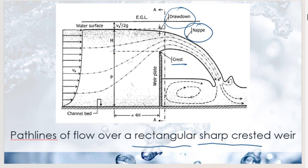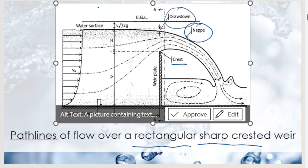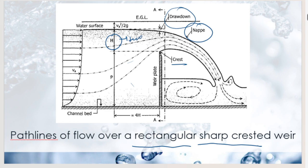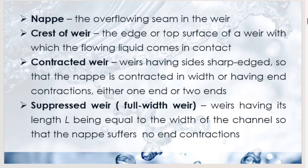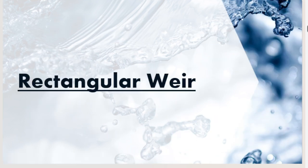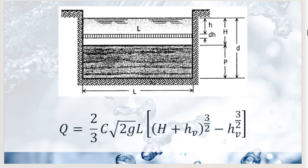There is also the Bazin formula, applicable for rectangular weirs with lengths from 0.5 m to 2 m, under heads from 50 mm to 600 mm — a wider range than Francis. The formula is: C-sub-w = 0.5518 × [3.248 + (0.2161/H)] × [1 + 0.55(H/D)²]. It is more complex but applicable over a broader head range.